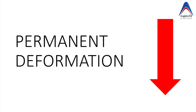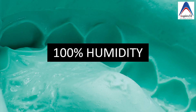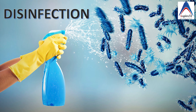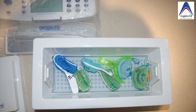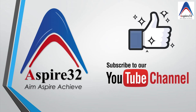If you need to delay pouring — which is ideally not recommended — you should always keep the impression at 100% humidity. As soon as you pour it, you should wait 60 minutes before separating the impression material from the cast. For disinfection of the alginate impression, textbooks recommend glutaraldehyde or sodium hypochlorite for 10 minutes for complete disinfection without affecting the properties of the alginate impression.